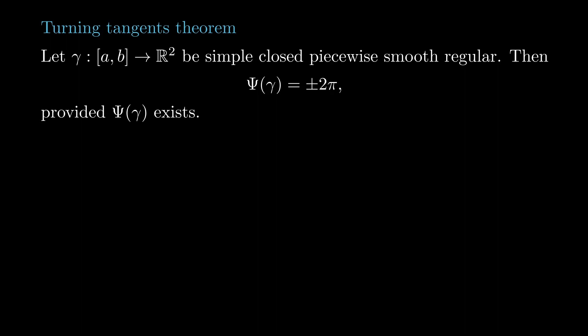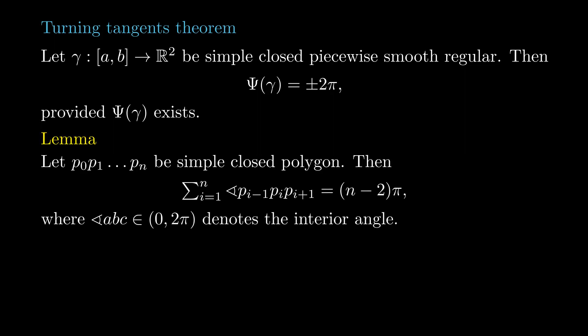To prove this theorem, we first need an elementary result about polygons in the plane. This lemma says that for a simple closed piecewise linear curve, the sum of its interior angles is n-2 times π, where n is the number of sides.